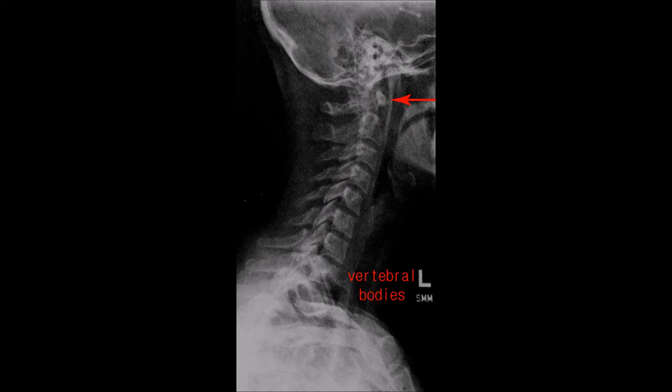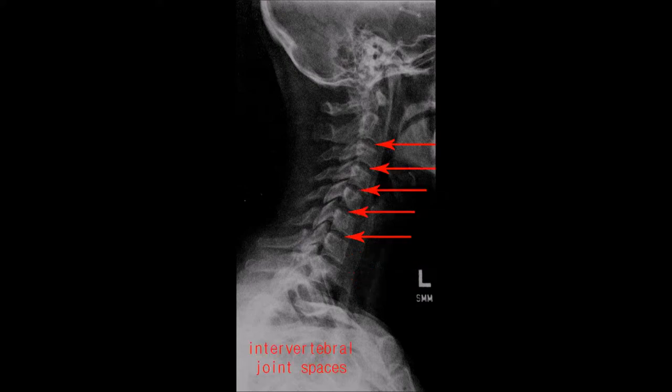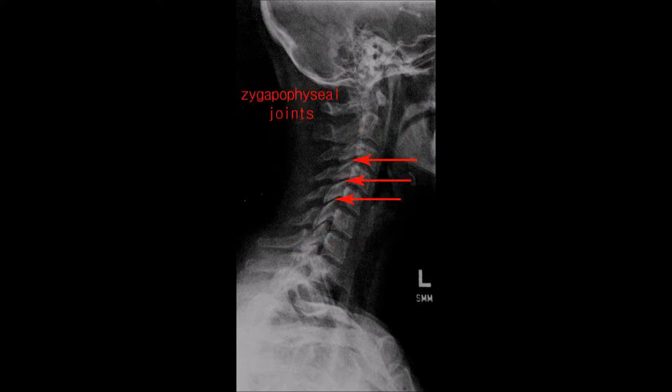The anatomy demonstrated here are the vertebral bodies of C1 through C7, the intervertebral joint spaces, spinous processes, zygopophyseal joints, articular pillars, and sometimes the dens.